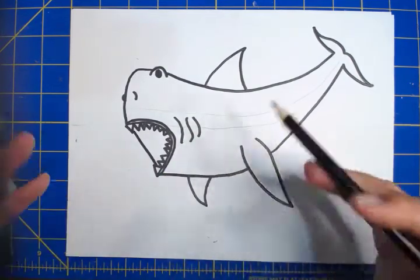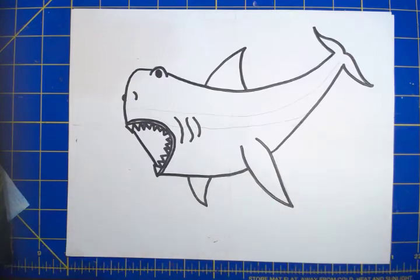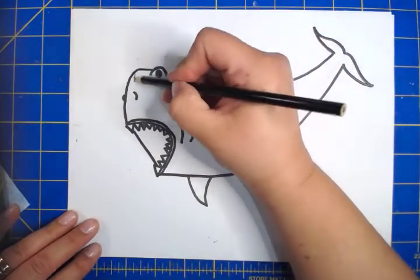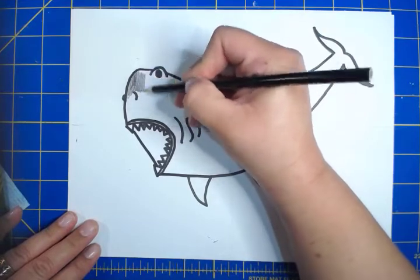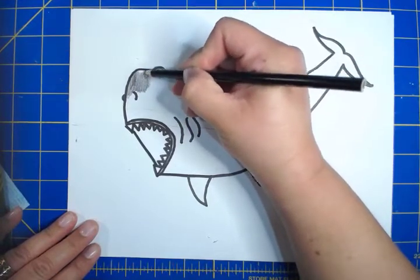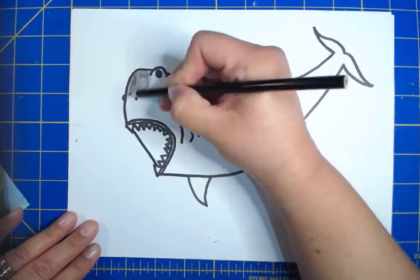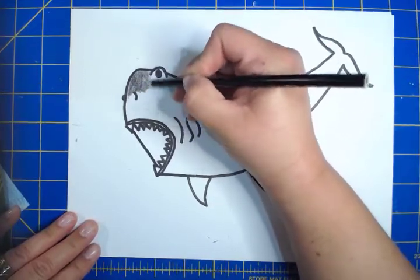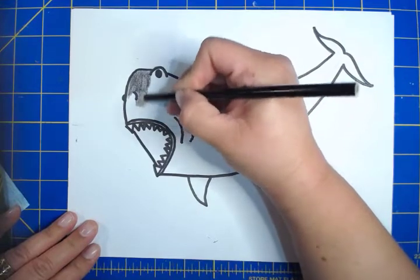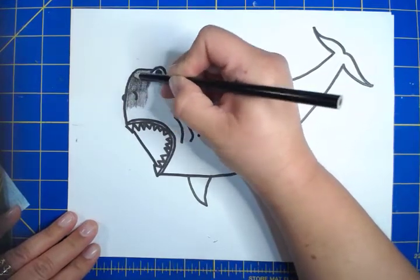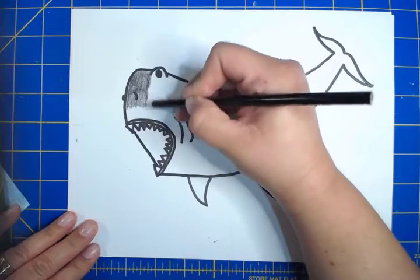So when I start coloring up here, I'm going to put a lot of pressure on my colored pencil. And then as I go down, then I apply less pressure.